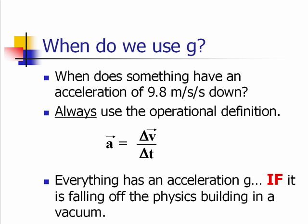in the very special case of things falling off the physics building in a vacuum. And it doesn't matter what it is. It could be a grand piano, it could be your textbook. If it's falling in a vacuum, it is in free fall. And in that special case, it always has the same value of 9.8 meters per second per second down.